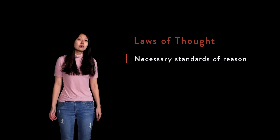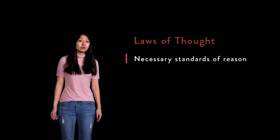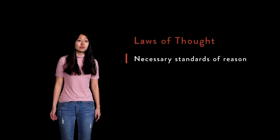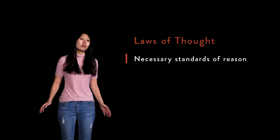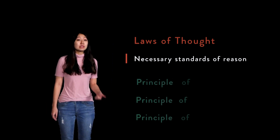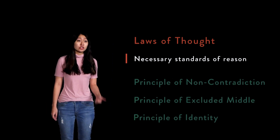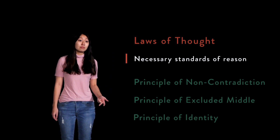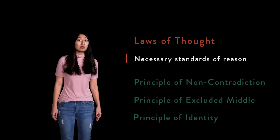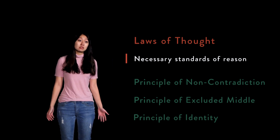Nevertheless, the principles expressed in these laws of thought are so basic to reasoning that some philosophers have argued that, if one were to deny some or all of them, we couldn't reason at all. These include, first, the principle of non-contradiction; second, the principle of the excluded middle; and third, the principle of identity. These are considered to be fundamental principles upon which much of philosophical reasoning is based.